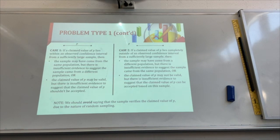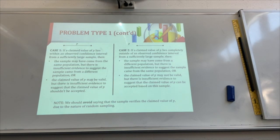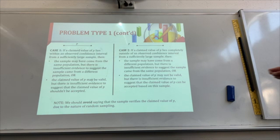Statistics can be used in many ways to justify research. Case two: if a claimed value of P lies completely outside an observed confidence interval from a sufficiently large sample, then the sample may have come from a different population, but there's insufficient evidence to suggest that the sample came from the same population. Or: the claim value of P may not be valid, but there's insufficient evidence to suggest the claim value of P can be accepted based on this sample. We should always avoid saying the sample verifies the claim value of P, due to the nature of random sampling.